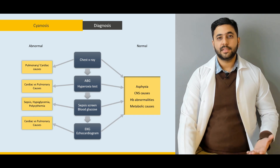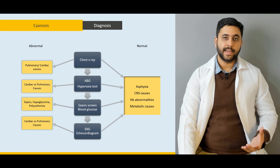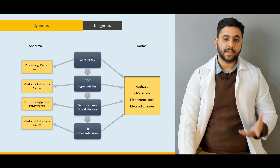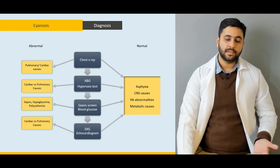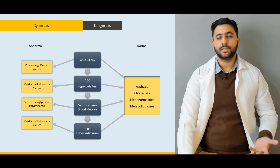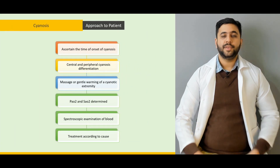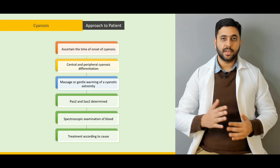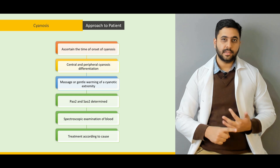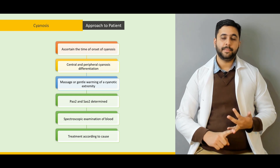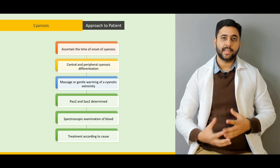Afterwards we are going to see what are the various investigations we do and how they help us in making a very good clinical diagnosis of cyanosis — be it a chest X-ray, an ABG, a blood CP screen, or an echocardiogram which gives us a good indication of what is going on at the cardiac level. Then we will discuss how to approach a patient with cyanosis: what are the various steps involved to clinically differentiate peripheral and central cyanosis, and what various parameters help us in overall evaluating the condition of the patient.